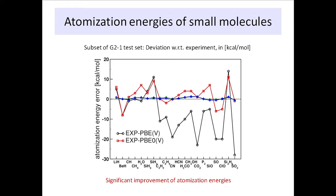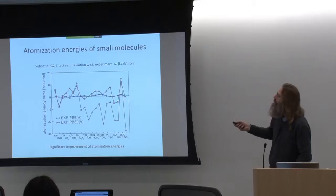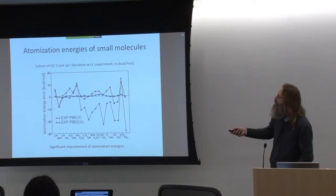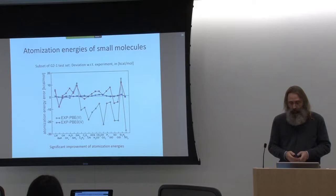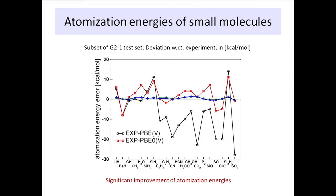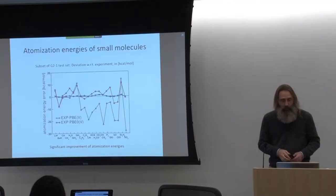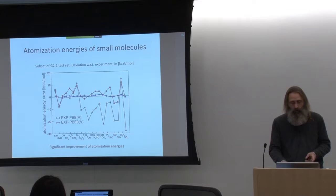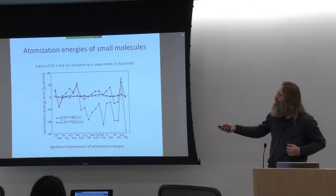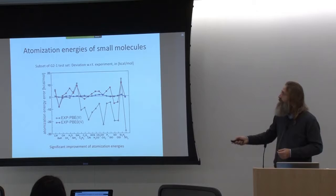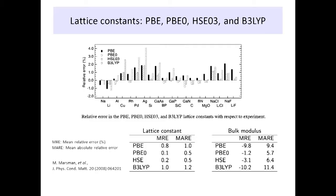This is a comparison of atomization energies for a test set of molecules for PBE and PBE0 compared to a Gaussian calculation. The agreement between the two codes is almost perfect — hardly any differences larger than 1 kJ/mol. But with respect to experiment there are still quite big differences, smaller for the hybrid functional than for PBE. The hybrid functional is the red line and PBE is the black line, but our accuracy is still far away from chemical accuracy.